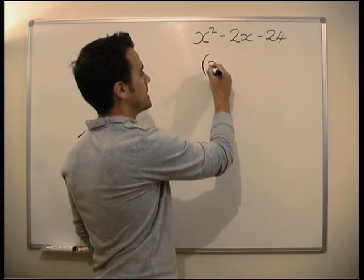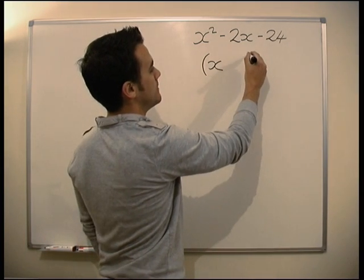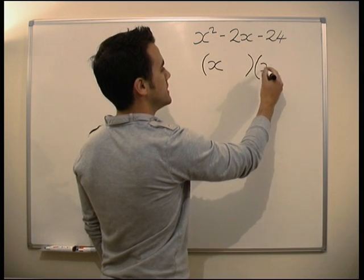Let's start to think. First off, let's draw brackets. We put our x in, we know it's just going to be x in either one, so we've just got an x here. We put our x in here.